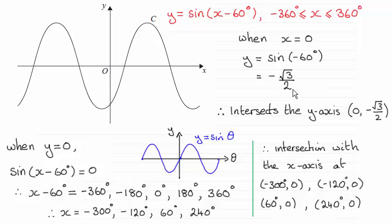And for where it crosses the x-axis, set y equal to 0. So you've got the sine of x minus 60 equals 0. And then we should know that the inverse sine of 0 is going to be at these key points: minus 360, minus 180, 0, 180, and 360 degrees.